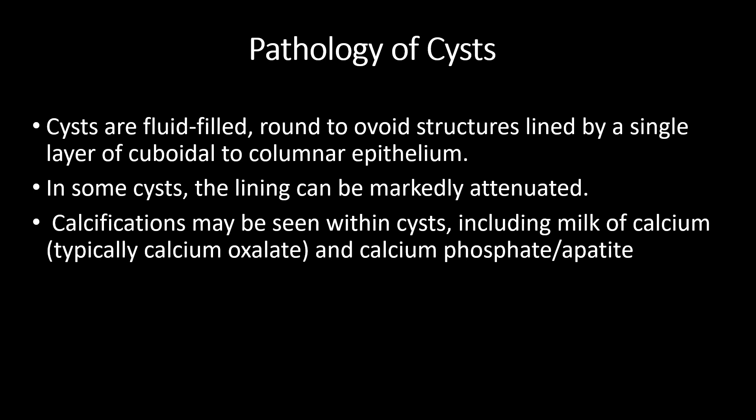Cysts are fluid-filled, round or ovoid structures lined by a single layer of cuboidal to columnar epithelium. In some cysts, the lining can be markedly attenuated. Calcifications may be seen within cysts, including milk of calcium, typically calcium oxalate, and calcium phosphate, or calcium apatite.